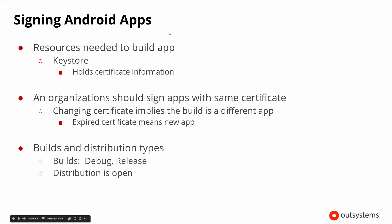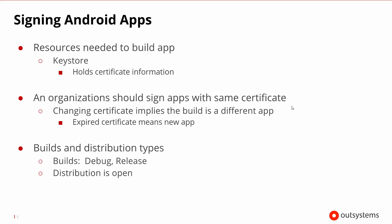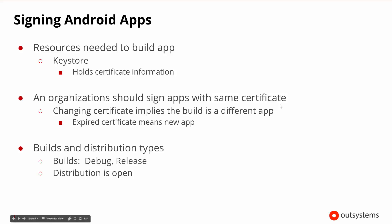How do we sign Android apps? The resources we need to build the app are really just a key store, and that key store will hold the certificate information inside of it — so it's a little bit simpler. An individual organization or an enterprise should sign the apps with the same certificate. A certificate could represent an individual or a company, and it helps to use the same certificate whenever we represent that same entity. When you deploy different types of apps, if the same certificate is used from the same organization, then you can share code and make modifications more easily.